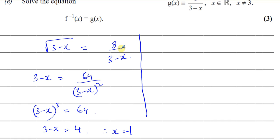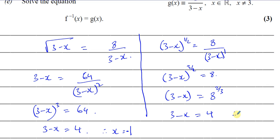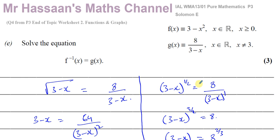An alternative method: write √(3 - x) as (3 - x)^(1/2). Multiply both sides by (3 - x), giving (3 - x)^(3/2) = 8. Raise both sides to the power 2/3: 3 - x = 8^(2/3). Since the cube root of 8 is 2, and 2² = 4, we get 3 - x = 4, so x = -1. Both methods give the same answer.